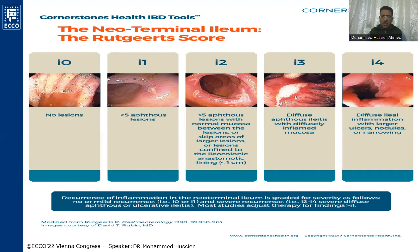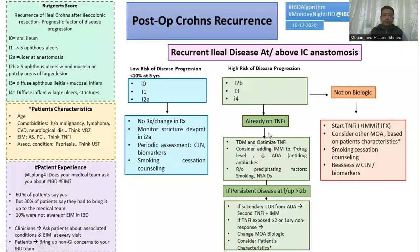i3 means there is diffuse aphthous ileitis with diffusely inflamed mucosa. i4 means there is diffuse inflammation with large ulcerations, and we may find narrowing or stricture development. This is the Rutgeerts scoring system for evaluation of the patient and progression of the disease.